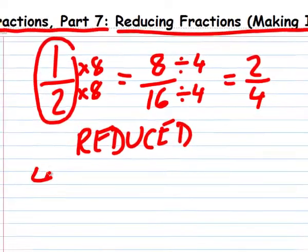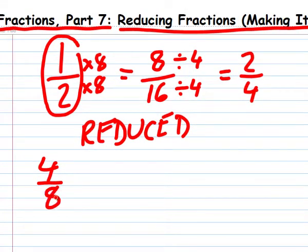For instance, let's reduce 4 eighths. Well, 8 is divisible by 4, so let's try that. 4 divided by 4 is 1, and 8 divided by 4 is 2. 4 eighths equals 1 half.